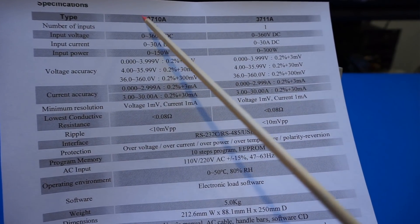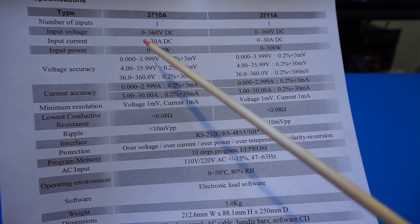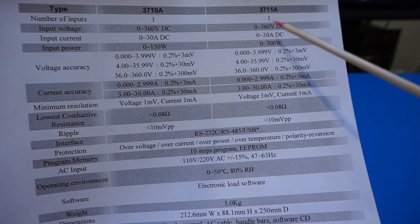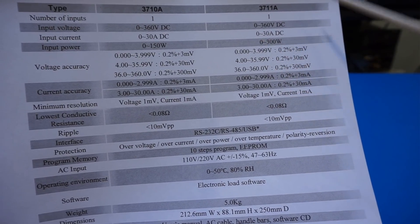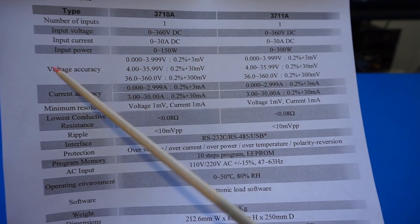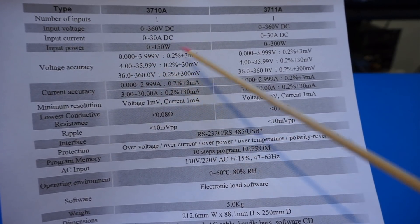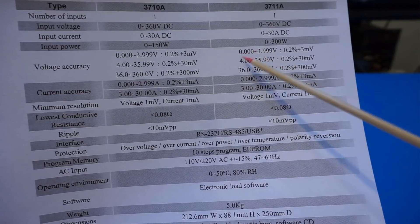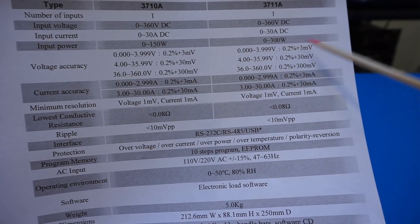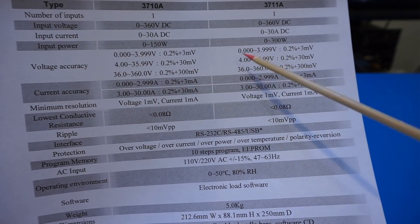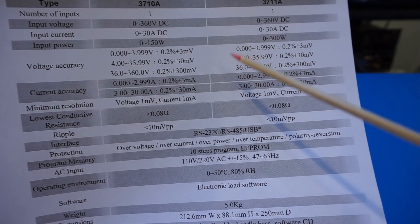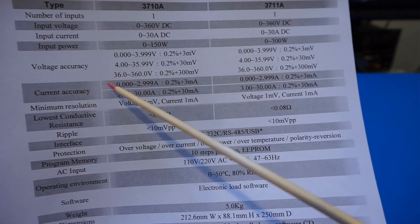So let's first take a look at the specifications here and I have the printouts here basically having the 3710A and 3711A side by side and as you can see the only difference seems to be the input power. For the 3710A it's 0 to 150 watts whereas the 3711A the maximum dissipation is 300 watts. Everything else looks pretty much identical. Now if you look at the voltage accuracy here from 0 to 3.999 volts the accuracy is 0.2 percent plus 3 millivolts. So this suggests that the unit is using at least a 10-bit DAC because we have 1,024 steps that gives you roughly 3 millivolts here and you can see that the next range is 30 millivolts because the range is 10 times larger and 300 millivolts for the even higher voltage range. The same goes for the current accuracy as well.